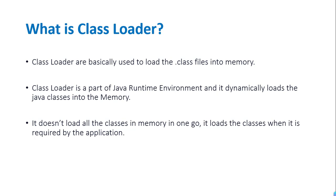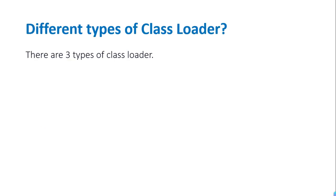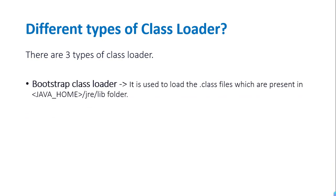There are basically three types of class loaders. The first one is the Bootstrap class loader. It is basically used to load the .class files which are present in the java_home/jre/lib/rt.jar. Now we will see where exactly this location is and which files the bootstrap class loader loads.